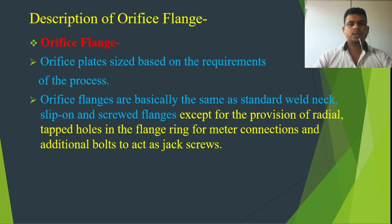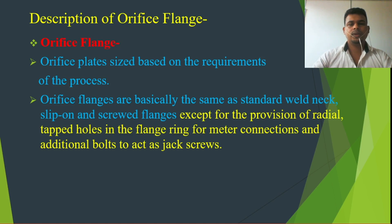Regarding orifice flange standards, we basically use the same standard as for weld neck, slip-on, and screwed flanges — which is ASME B16.5. For orifice flanges, this covers everything except the provision of radial tapped holes in the flange ring for meter connection and an additional bolt to act as a jack screw. Those are covered by ASME B16.36.